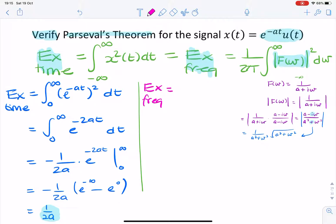So Ex in the frequency domain is 1 over 2 pi times the integral of, oh, we can still simplify this a little bit more.